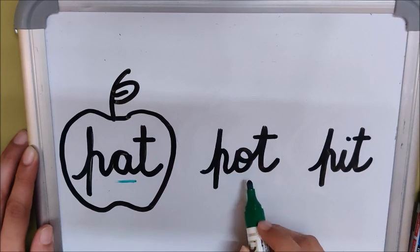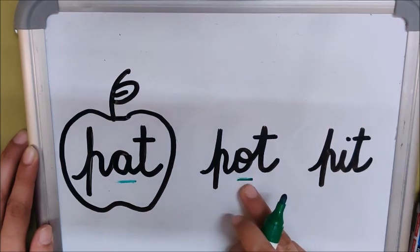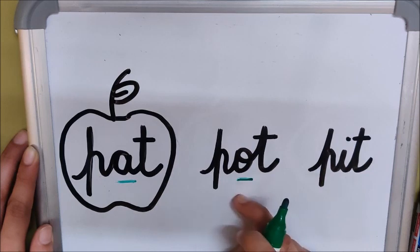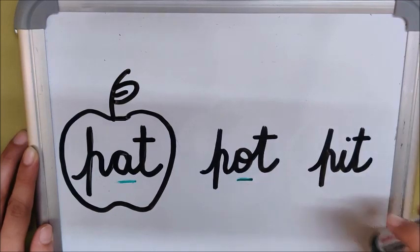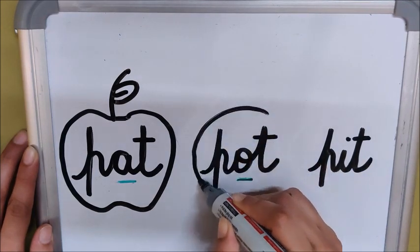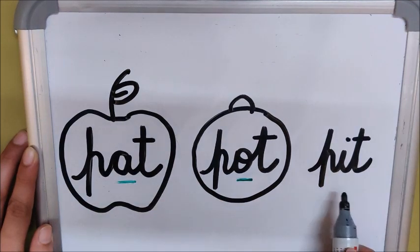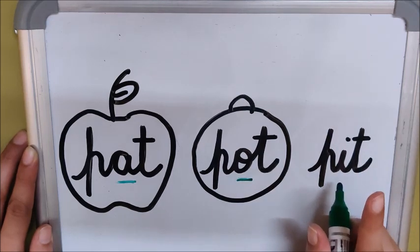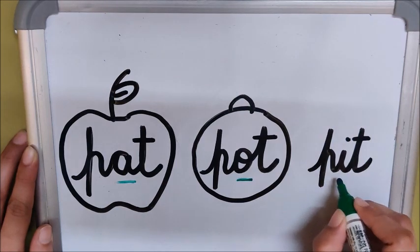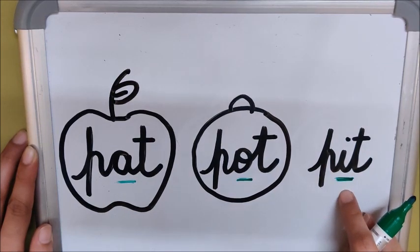Now let us check this word. What is the middle sound here, children? 'Oaa' — very good. 'Oaa' is the middle sound here, so which word is it? Is it an apple word? No. Is it an idly word? No. Then what word is it? Orange word! So here I am going to draw an orange. Now this word, 'pit' — what is the middle sound? 'I/ee'. Apple is A, orange is O. So which word is it? Idly word! Mark it with an idly.